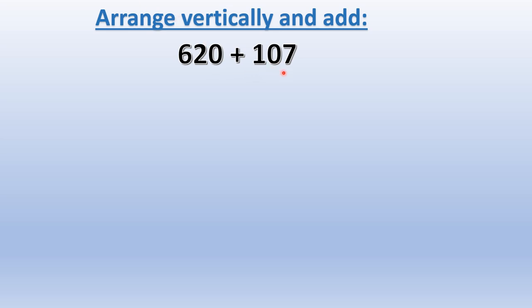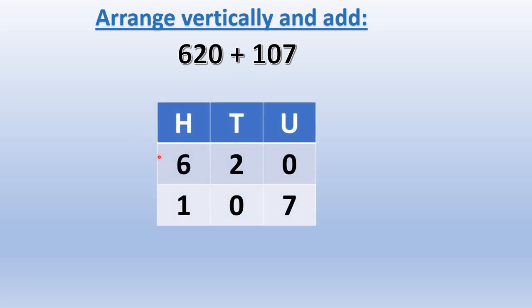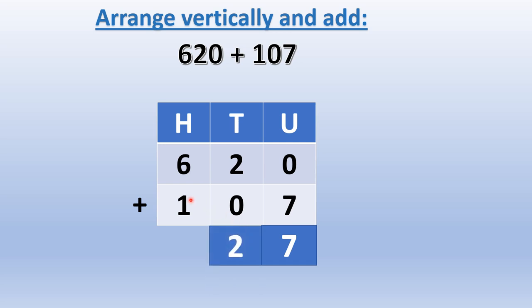620 plus 107. We write the place values: hundreds, tens, and units. For 620, we write 6 in the hundreds column, 2 in the tens column, 0 in the units column. For 107, we write 1 in the hundreds column, 0 in the tens column, 7 in the units column. We write the addition sign. 0 units plus 7 units — we get 7 units. 2 tens plus 0 tens — we get 2 tens. 6 hundreds plus 1 hundred — we get 7 hundreds. So 620 plus 107 we get 727.